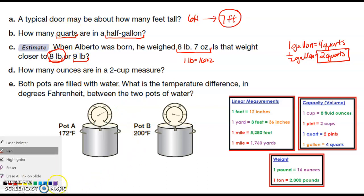How many ounces are in a two cup measurement? Let me see if they have that. So we have one cup is equal to eight ounces. So two cups, we're going to multiply by two and get 16 ounces.